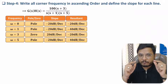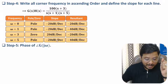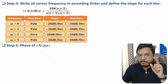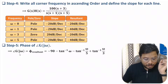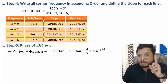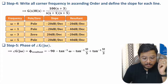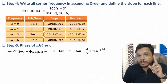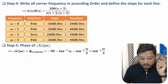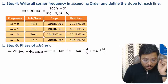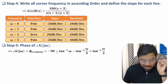First we substitute s = jω in the transfer function. Phase for zeros is positive and for poles is negative. We have one pole at the origin, so the angle contribution is −90°. For the pole at s = −1, substituting jω gives a contribution of −tan⁻¹(ω/1), so that is −tan⁻¹(ω) for this pole.